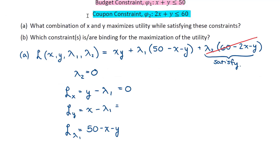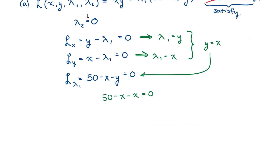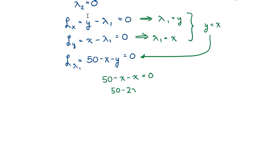Setting these all equal to 0: from the first equation, lambda 1 equals y; from the second equation, lambda 1 equals x. Therefore, y equals x. Substituting into the third equation: 50 minus x minus y equals 0, so 50 minus 2x equals 0, giving x equals 25. And since y equals x, y is also equal to 25.